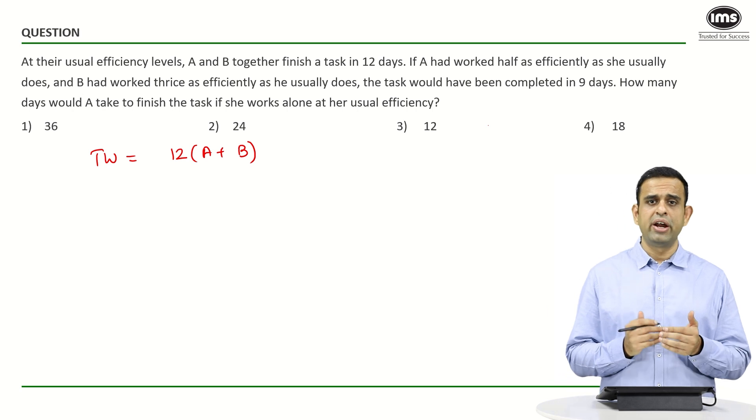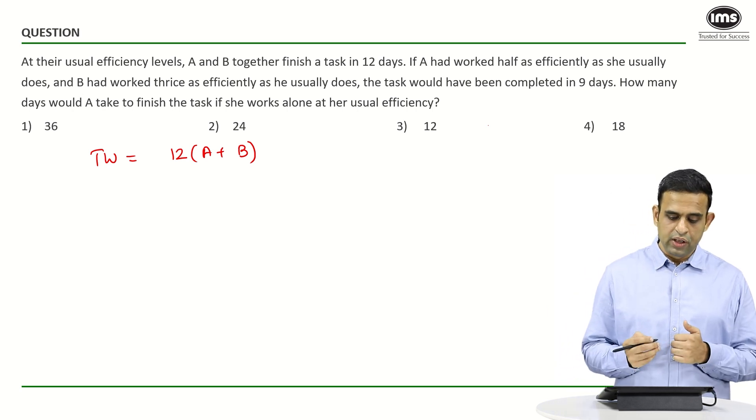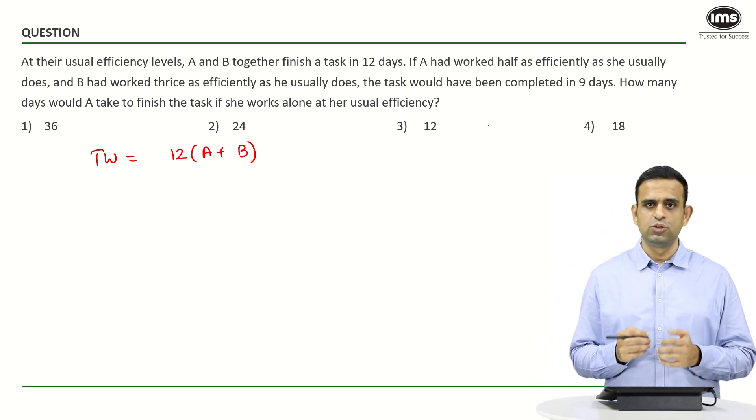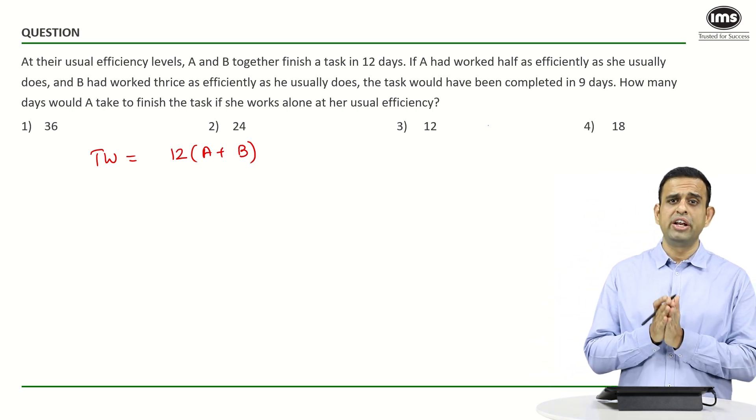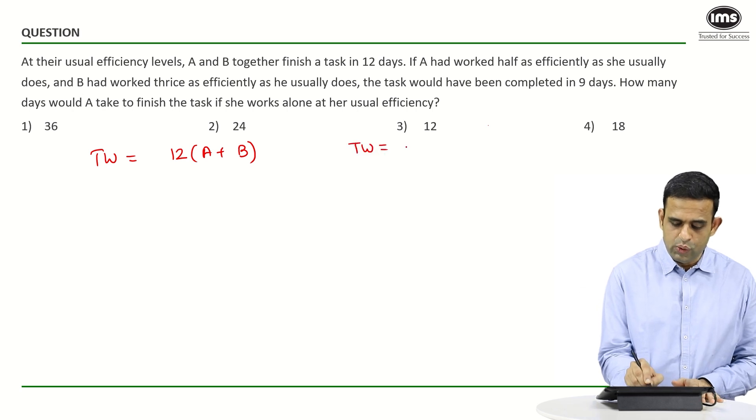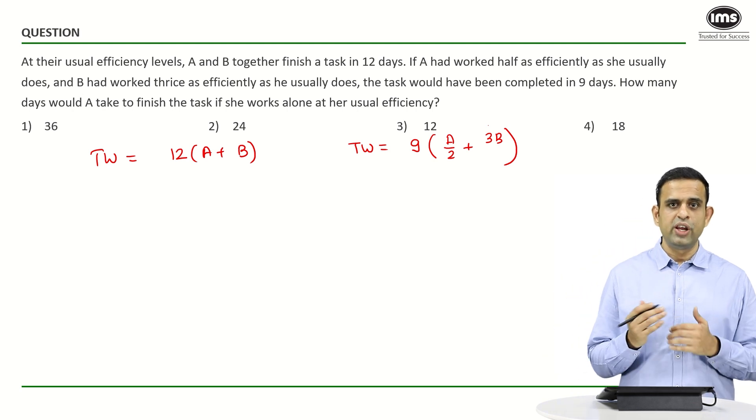In a day, A does A/2 and B does 3B. In this particular case, the work is done in 9 days. So total work should equal 9 days with per-day work of A/2 + 3B.